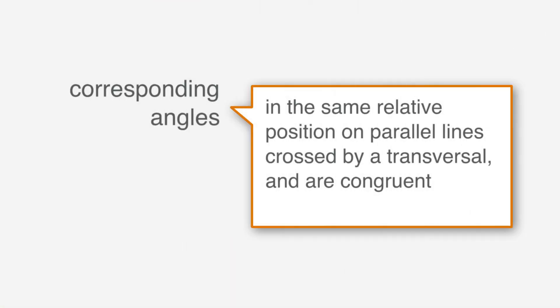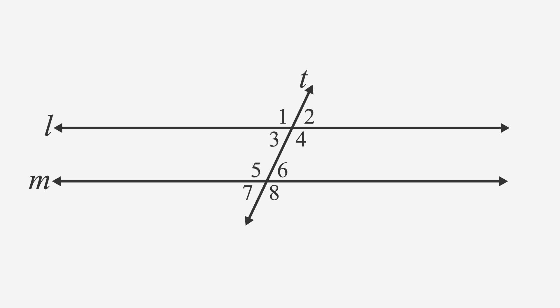Corresponding angles are in the same relative position on parallel lines crossed by a transversal and are congruent. Corresponding angles are also congruent, meaning they have equal measures, like angles 2 and 6. Since angle 2 is 50 degrees, so is angle 6.